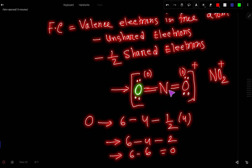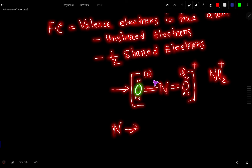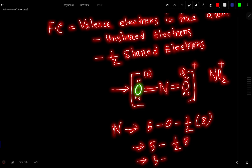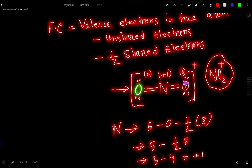Now find the formal charge for nitrogen. Valence electrons in the free atom of nitrogen is five. Unshared electrons for nitrogen is zero. Shared electrons are eight total (two double bonds), so half of eight is four. Five minus zero minus four equals plus one. So the formal charge of nitrogen is plus one, and this plus one accounts for the overall charge of the ion. For any ion, you must check the formal charges.